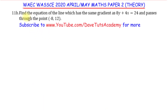In this question on the equation of a line, we are asked to find the equation of the line which has the same gradient as 8y plus 4x is equal to 24, and the line also passes through the point minus 8 comma 12.